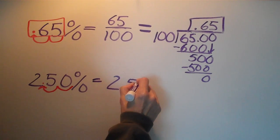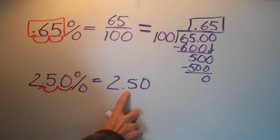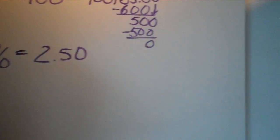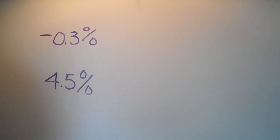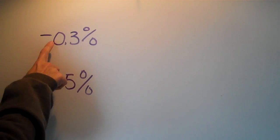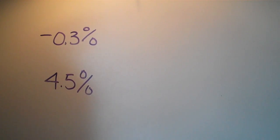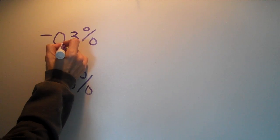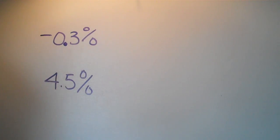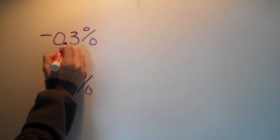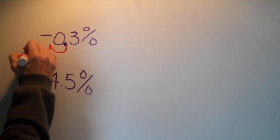Okay, what about these examples? We have negative three tenths percent. Sometimes you'll see a decimal and a percent in the same number. Well, what do we do there? The same thing - we start from the decimal, we move two places to the left.